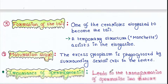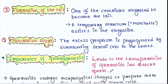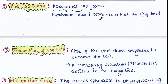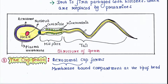The next phase is formation of the tail. One of the centrioles elongates to become the tail. This is the centriole — it elongates to become the tail.